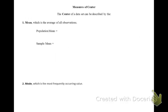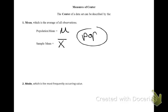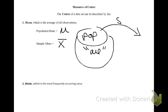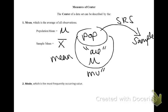Now that we have our notation down, let's go through our measures of center. The center of a data set can be described by the mean, the median, or the mode. The mean, in terms of symbols, can be described by mu for the population and x-bar for the sample. If this is your population — it means all — it's our big bucket. We come in and we take a simple random sample. The mean for the population, the mean for all, is mu. The mean for the sample is x-bar.